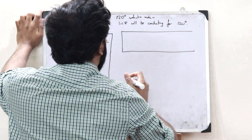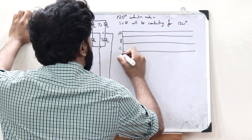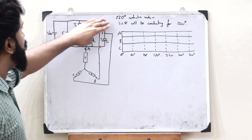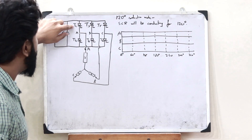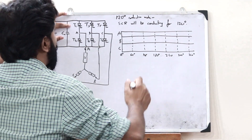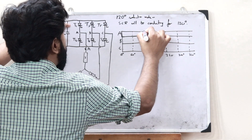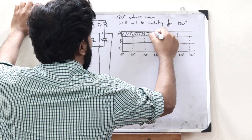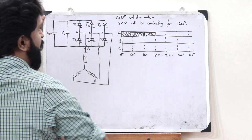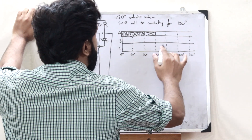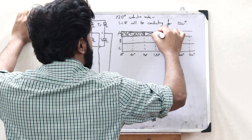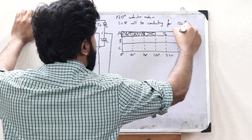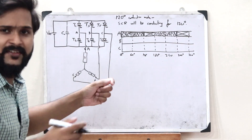Let us see a diagram with three phases A, B, and C divided into intervals of 60 degrees. In the case of 120 degree conduction mode for phase A, switch T1 will be on for the first 120 degrees. For the remaining 60 degrees it will be turned off — nothing would pass. Then for the next 120 degrees, from 120 to 240 degrees, T4 will be conducting, and again for the remaining 60 degrees it will be turned off. This is the case of phase A.